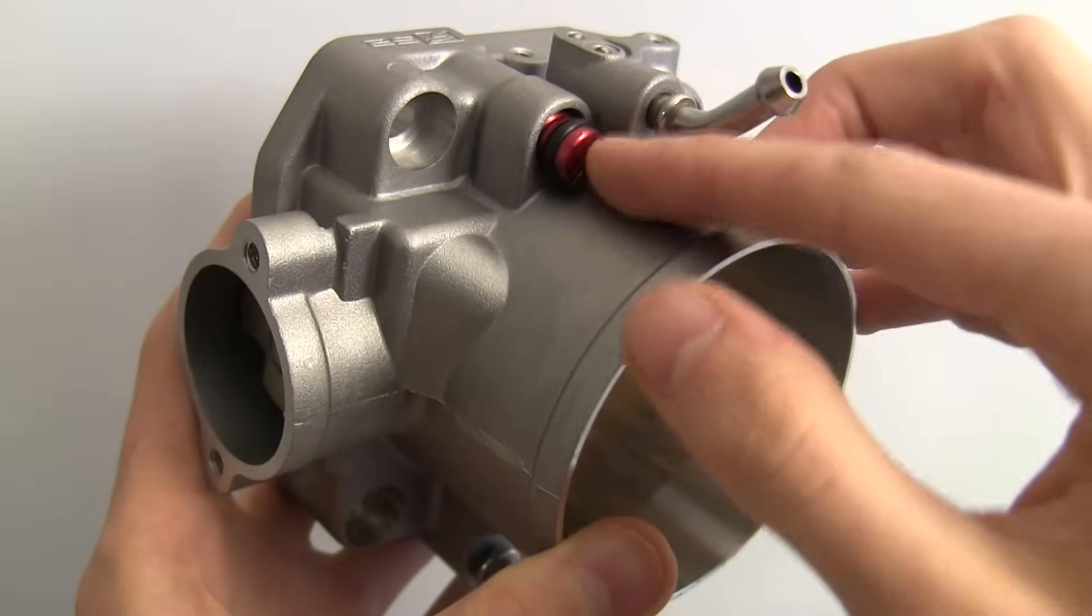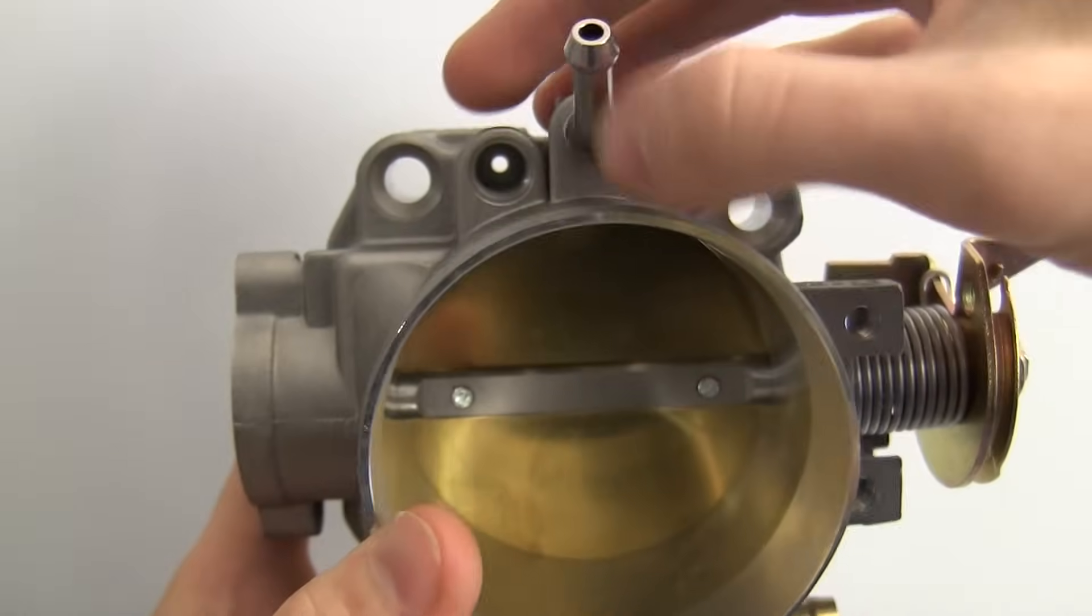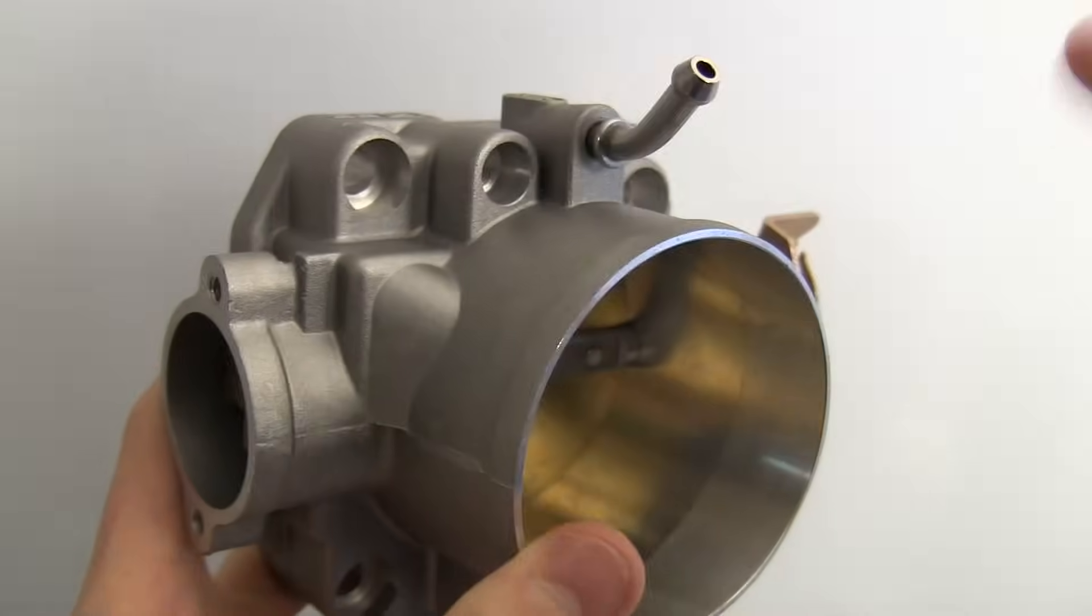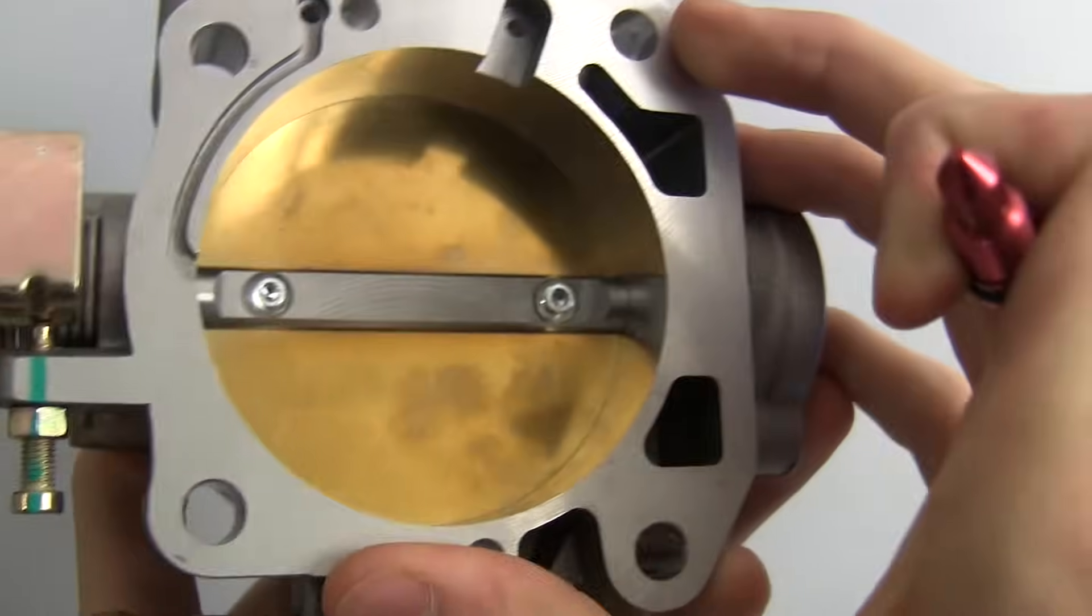Now up on top here we have the idle adjustment screw and this can be screwed in to this port here and allow for more or less airflow that's always going to be able to pass the throttle body to adjust your idle speed with the engine.